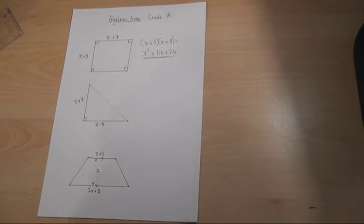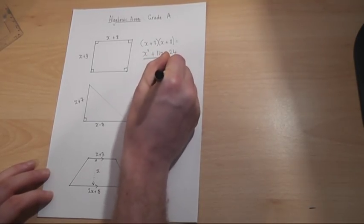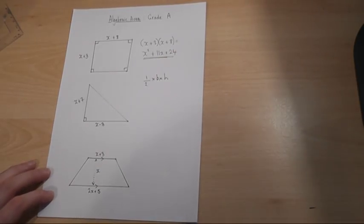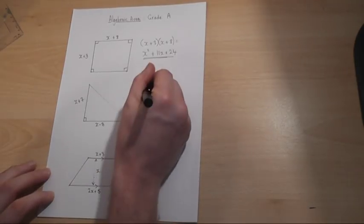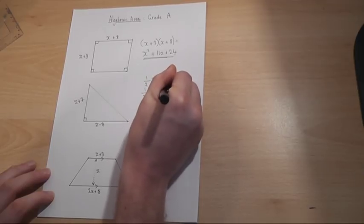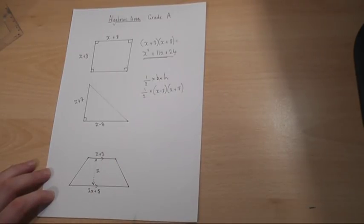Now for the second shape, we have a triangle. For a triangle we know we have to do a half times base times height. This is the base, this is the height. So the area must be ½ × base × height.